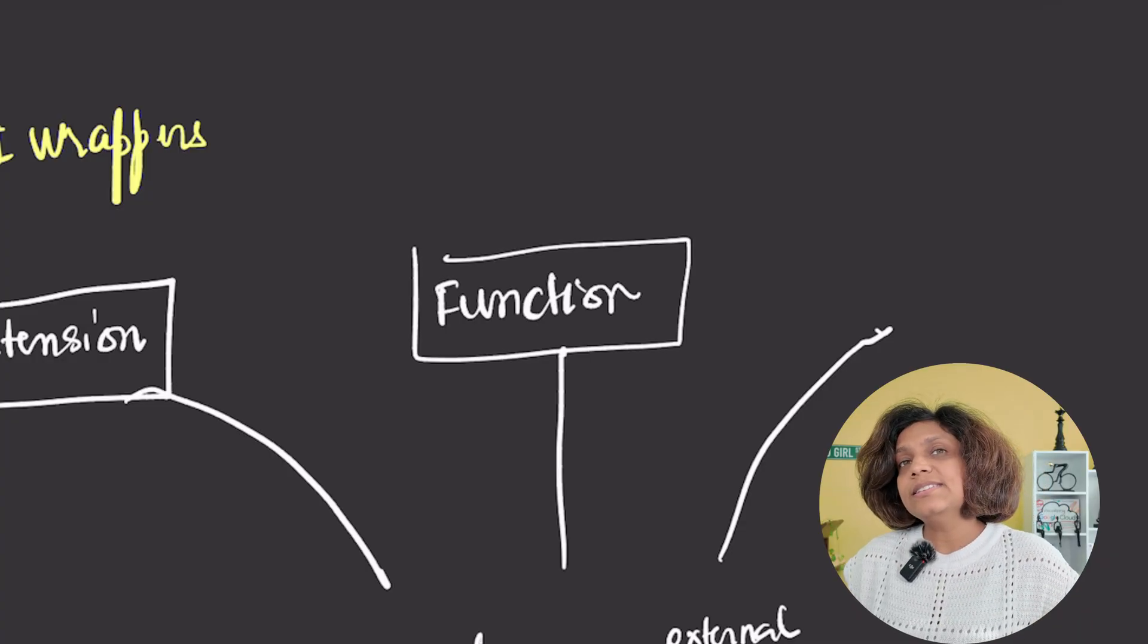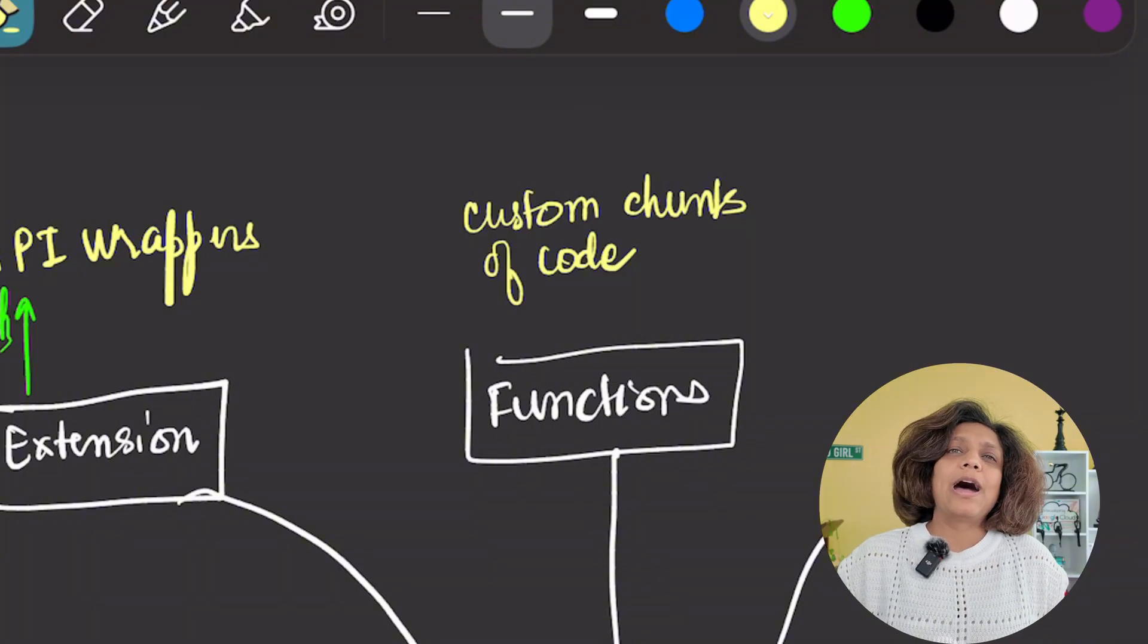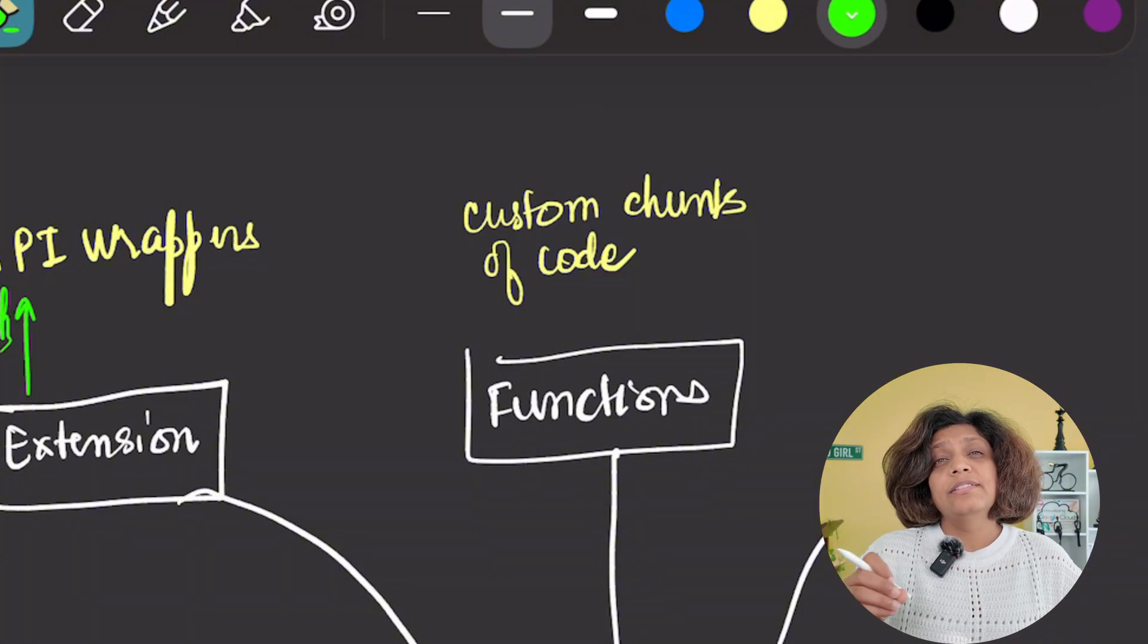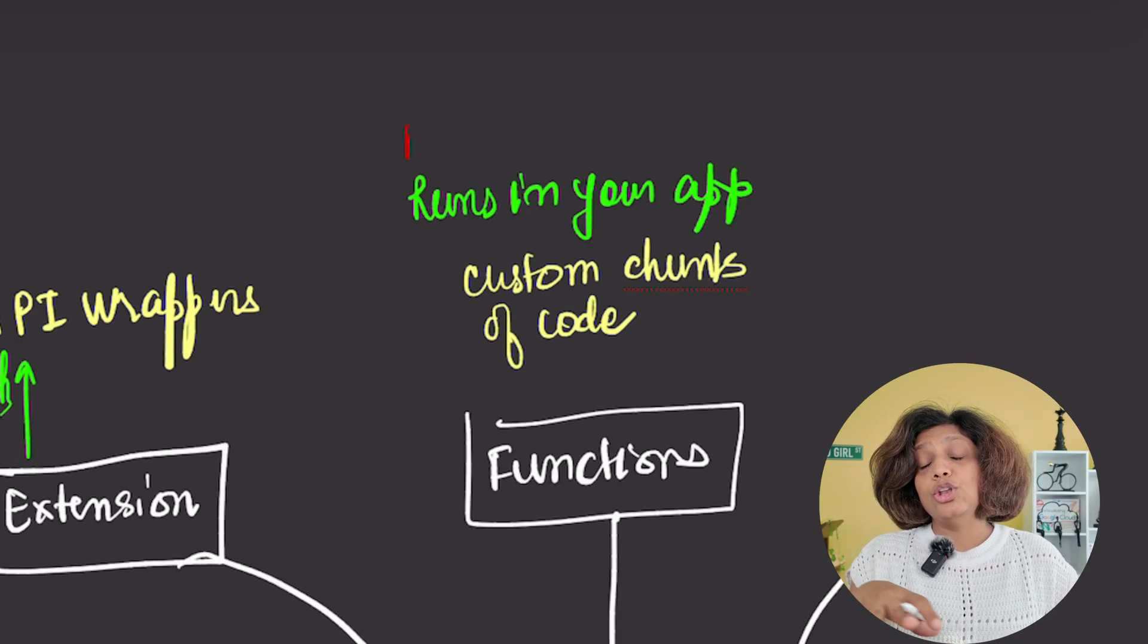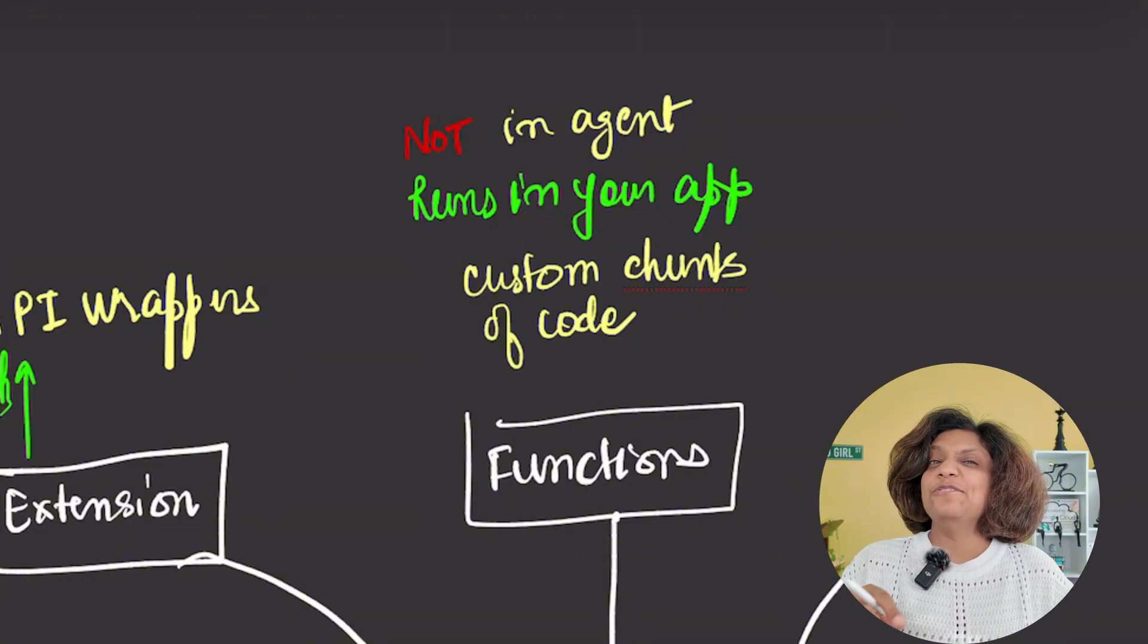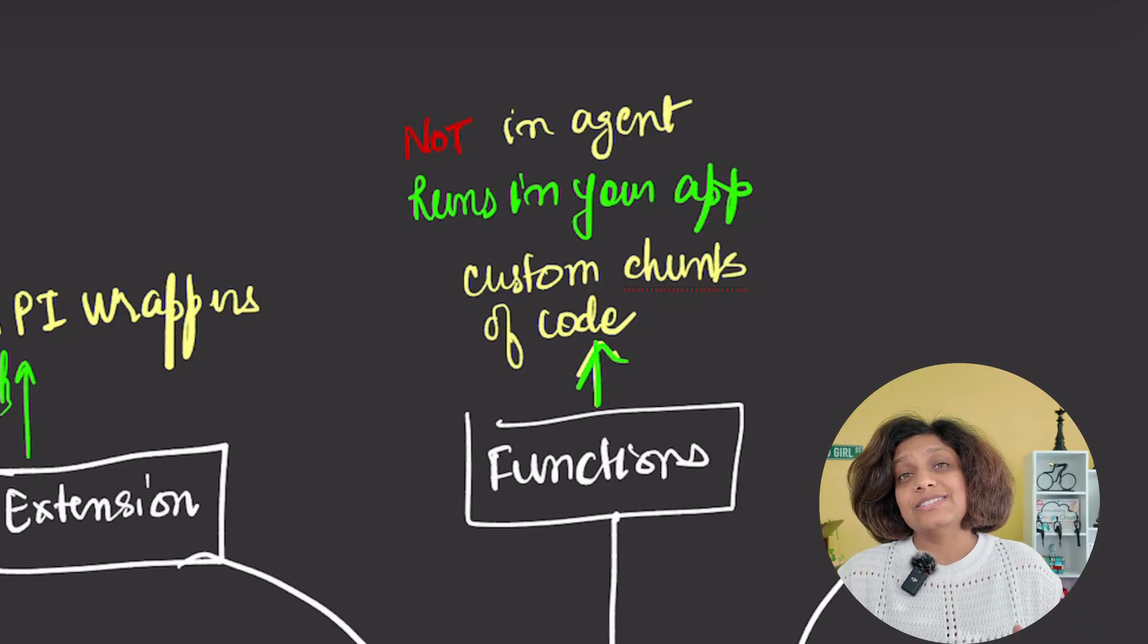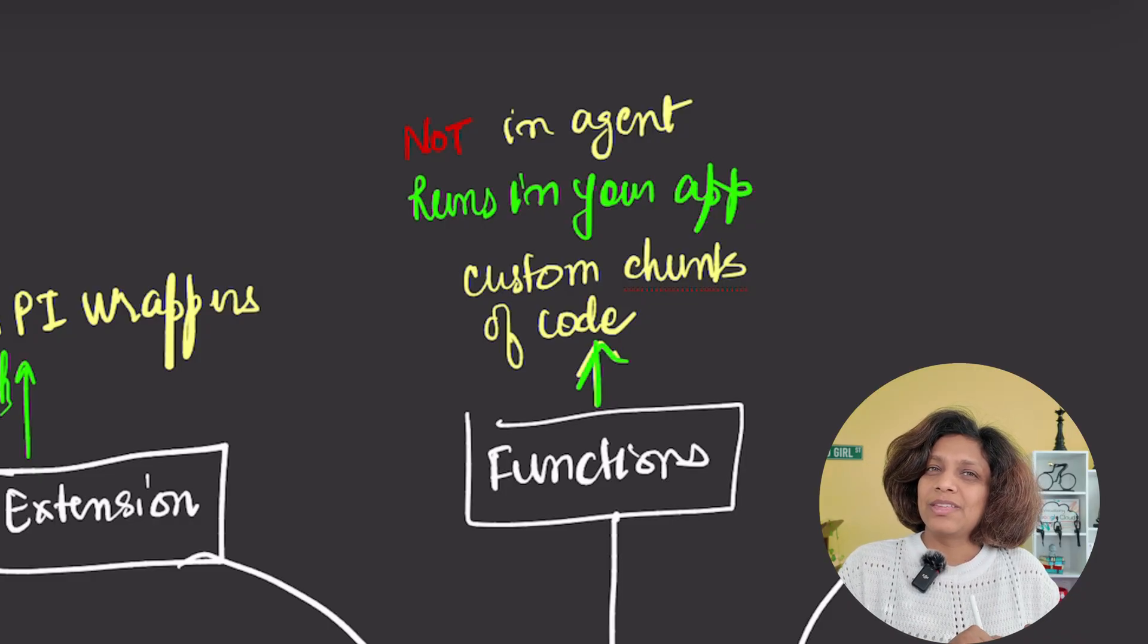Second tool is functions. These are the custom chunks of code that you write and control. This is the most powerful and secure option because the code runs in your application now. Not inside the agent. The agent decides which function to call and fill in the arguments. But you maintain complete control over the execution, the security and the post processing. Here's an example for this. If you have a proprietary calculate risk score function in your back end, you can expose it to the agent as a tool. The agent doesn't need to know your complex business logic. It just knows when to use it.